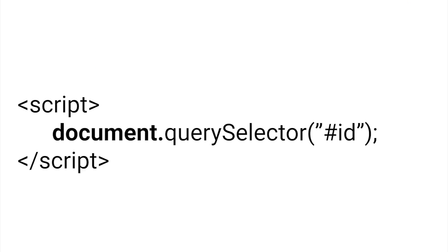You have actually seen examples of when we've used the Document Object Model to do something inside a website in some of the previous episodes. For example, when you write document.querySelector to select a certain class or ID tag inside the browser, we use the Document Object Model to get something inside the website using the document dot something keyword.